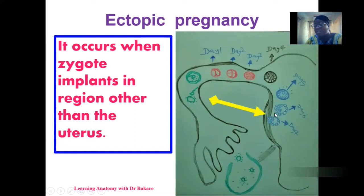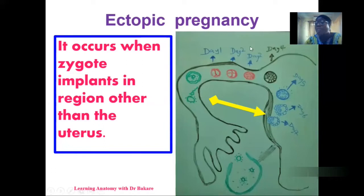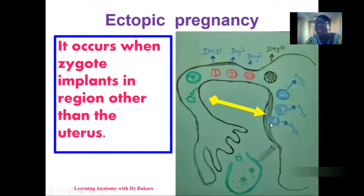The zygote finally gets into the endometrial lining of the uterus where it will be implanted. This is the uterus where normal implantation will take place — this is the normal scenario of how the process should be. If implantation occurs in other regions apart from the uterus, it is called ectopic pregnancy.